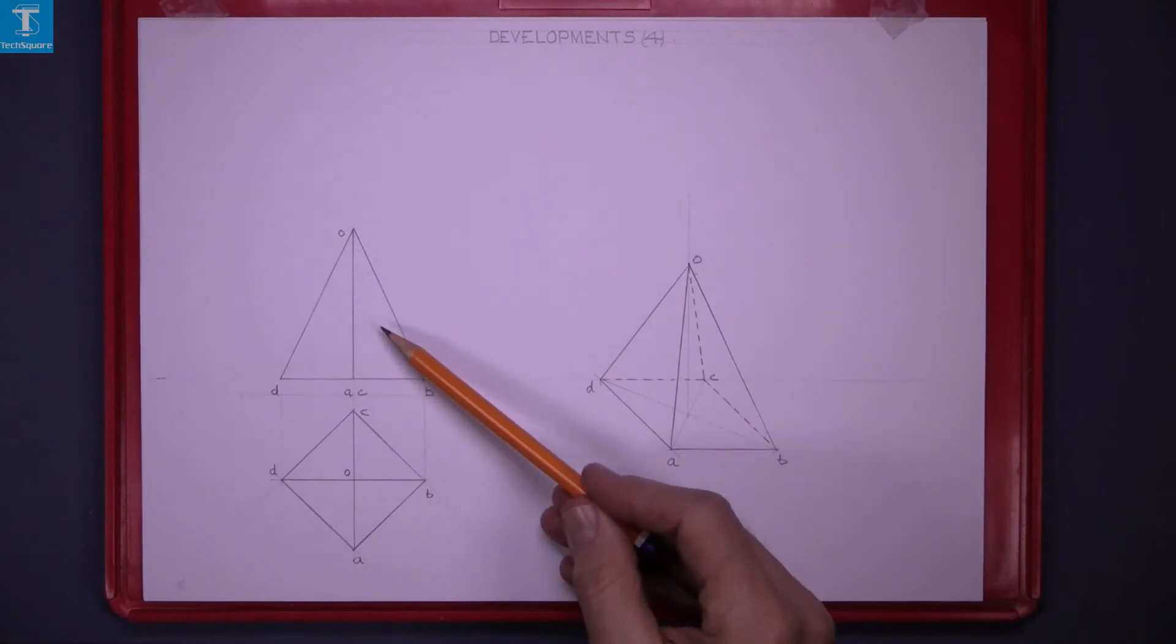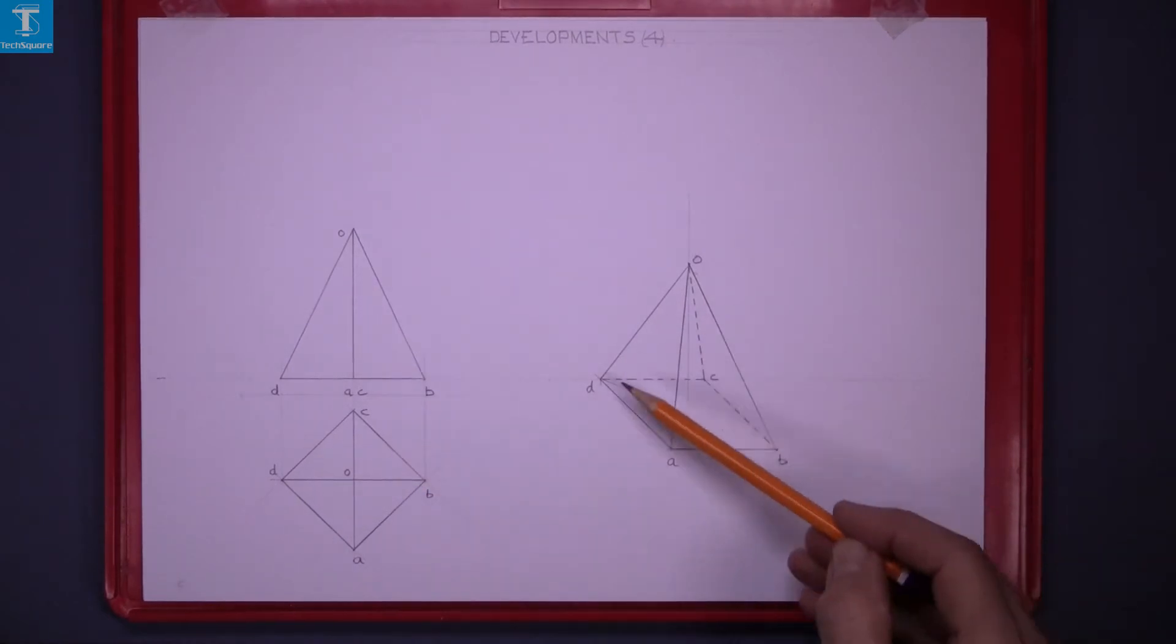Developments 4. Here are the elevation, plan and the oblique view of a square-based pyramid.